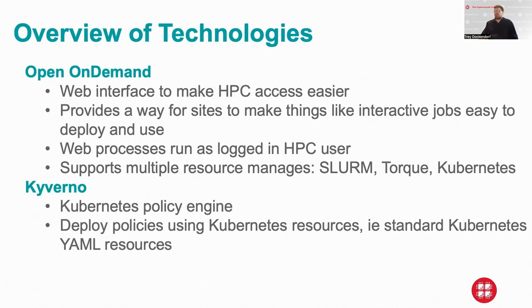Quick overview of technologies we're using: Open OnDemand is how we submit HPC jobs to Kubernetes. It's essentially a web portal for HPC access. A key part is that the web process runs as the user logged in to the HPC system, and it supports multiple resource managers like Slurm, Torque, and Kubernetes.